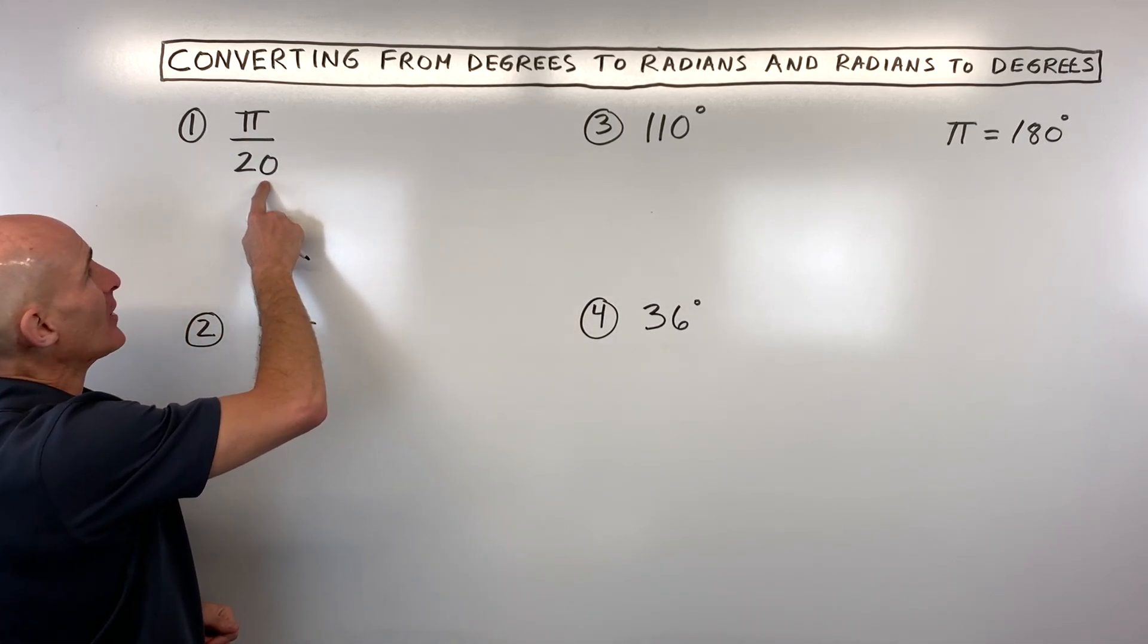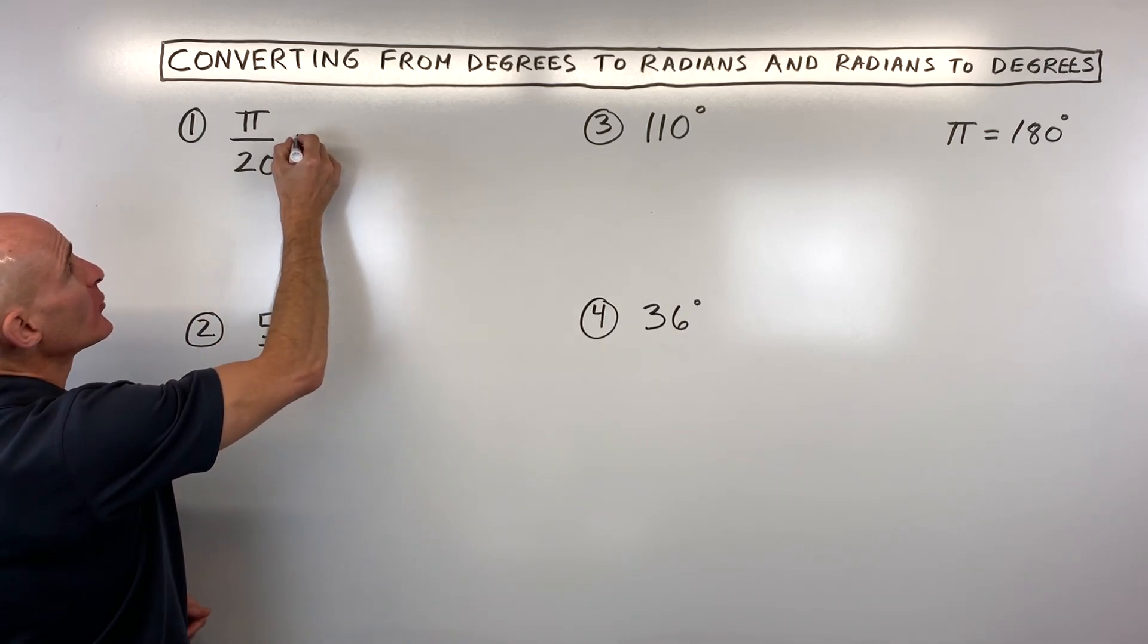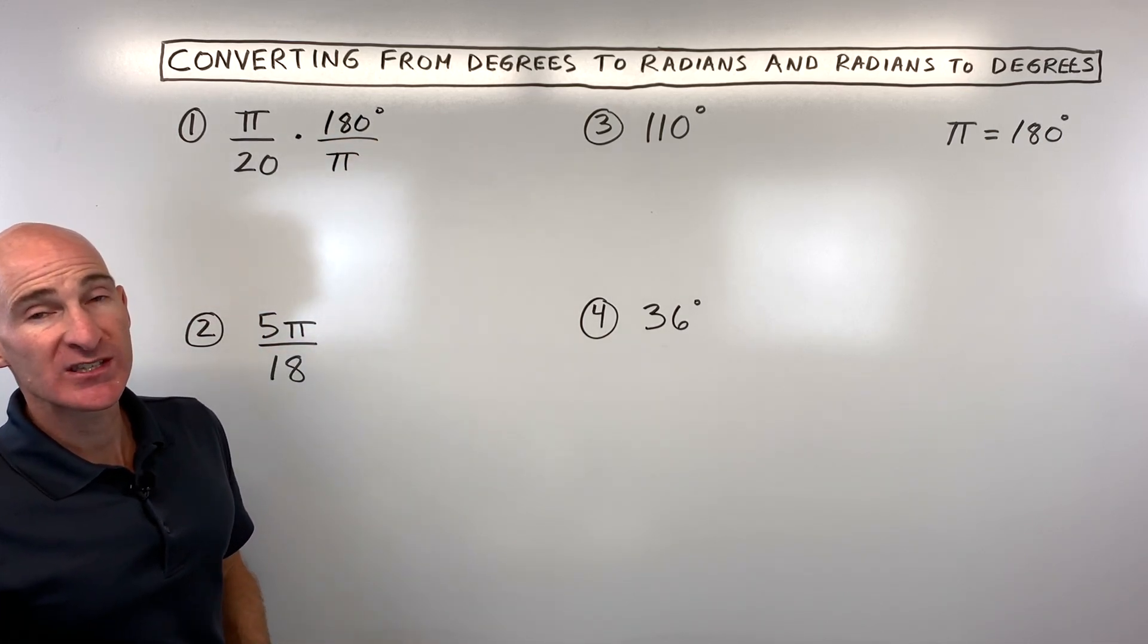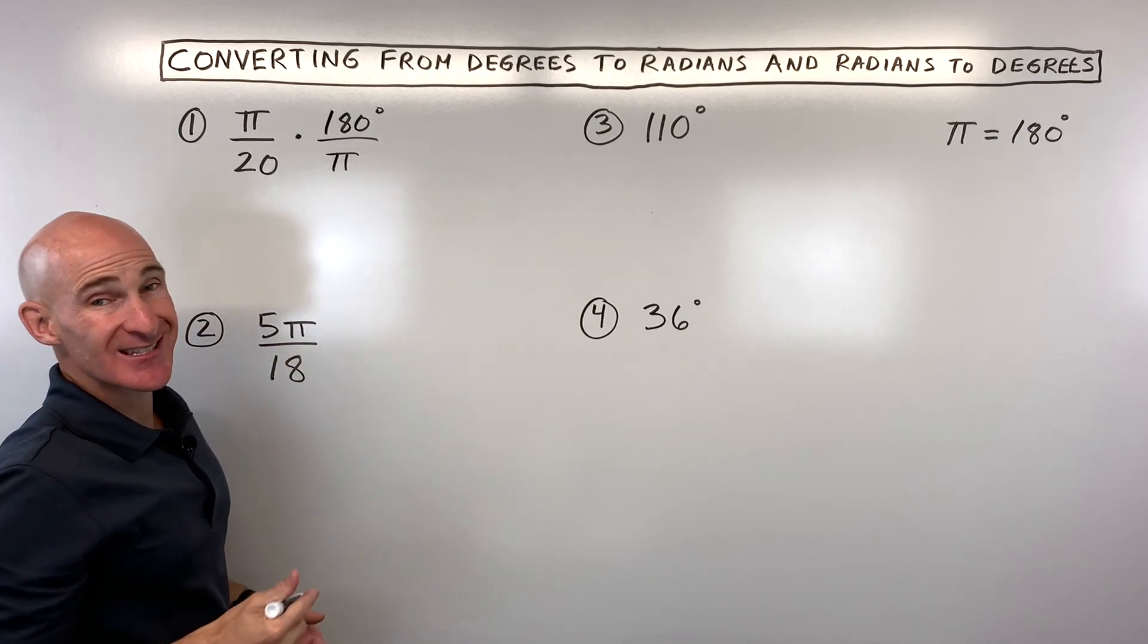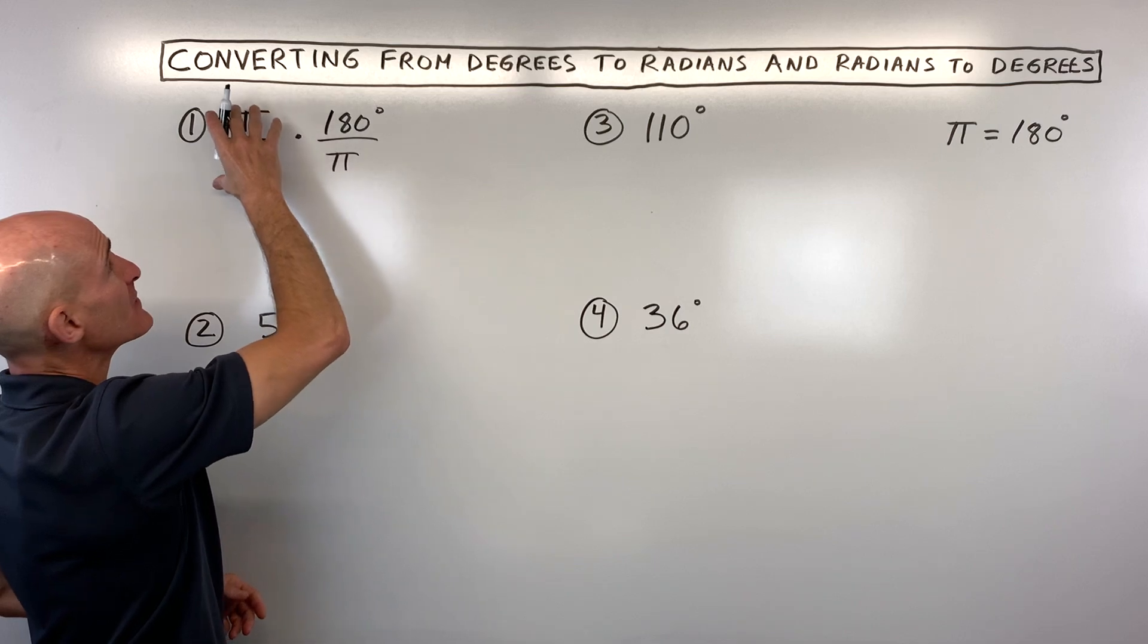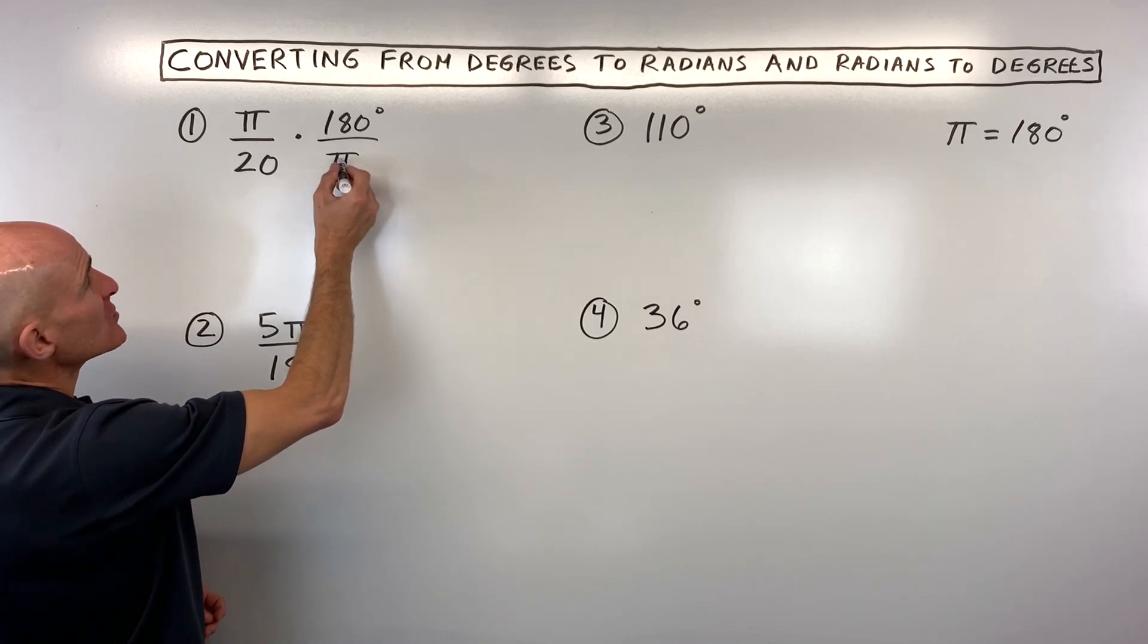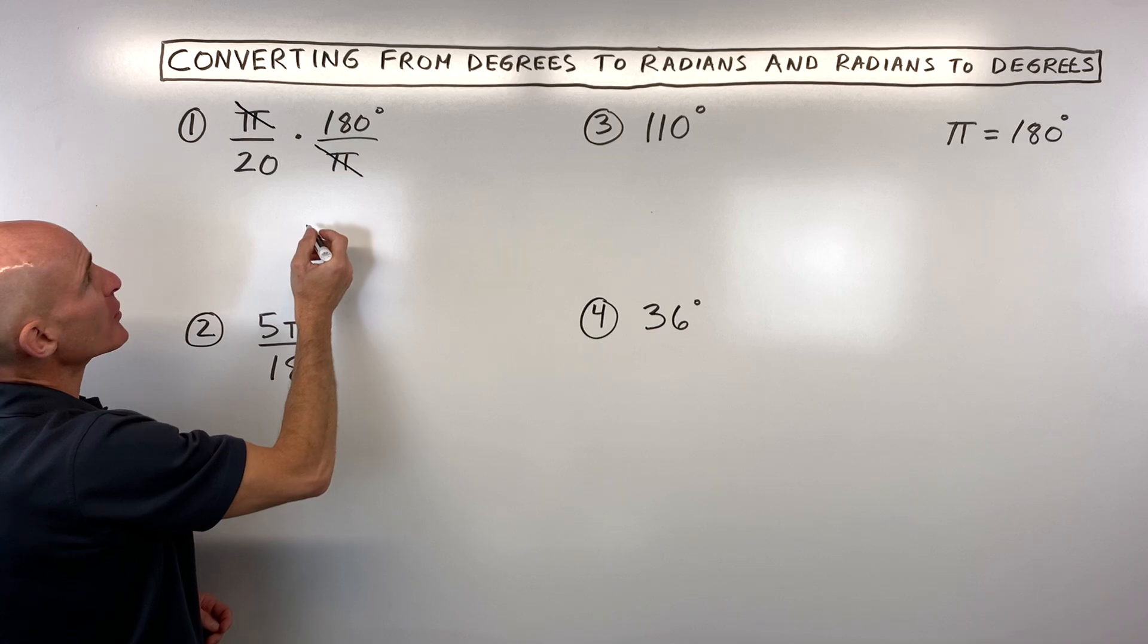Now say we're given an angle here in radians like pi over 20. What we do is we multiply by 180 degrees divided by pi. And the reason that we set it up this way is because 180 and pi are really the same. So anything divided by itself is 1, and then 1 times this fraction, it doesn't change the value, it just changes the units. So it's going to change the way that it looks. And the other reason we set it this way is because the pi in the denominator is going to cancel with the pi in the numerator here.